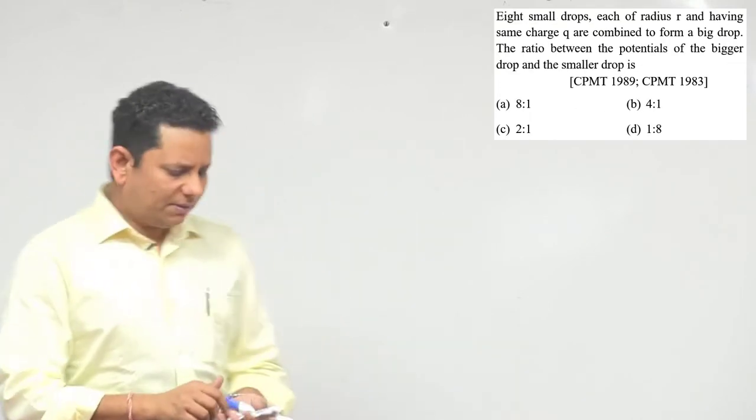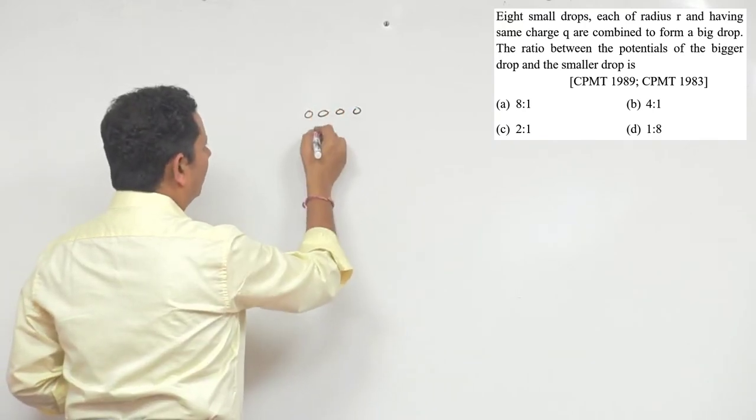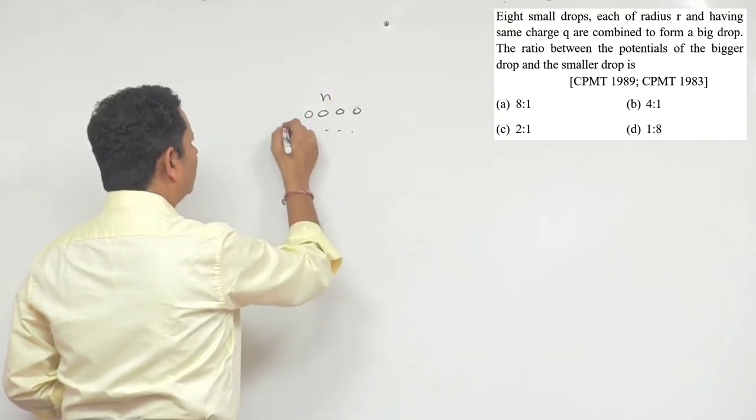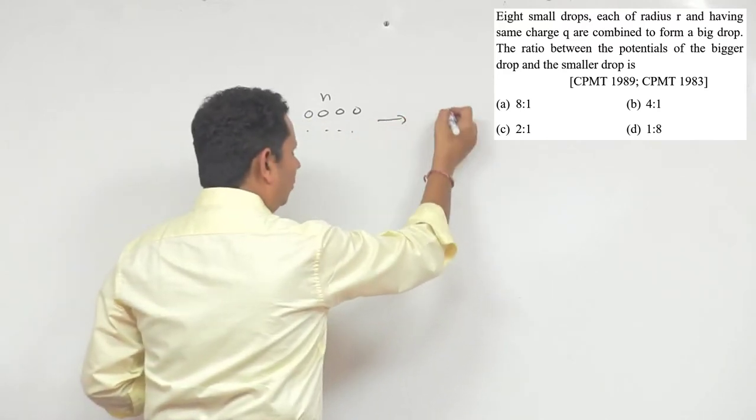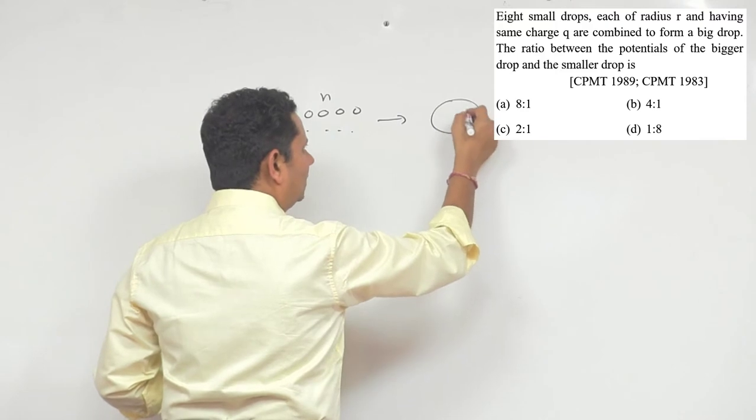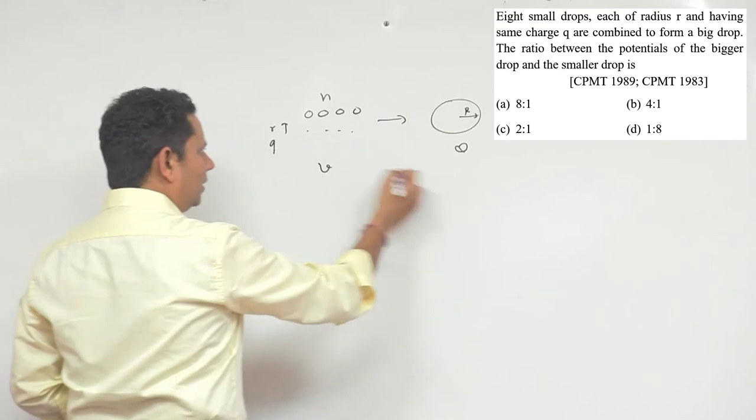This is a simple problem. We have n number of drops, each with radius r and charge q. These are combined to form a big drop with radius R and charge Q. We need to find the potential ratio.